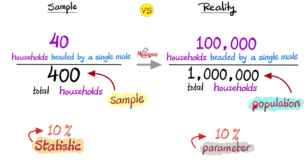Boring definitions: The population is the entire group you're interested in studying. The sample is the subset drawn from the entire population that you're interested in studying. A parameter is a certain characteristic of the population — for example, how many of them are headed by a single male. And the statistic is a number describing some characteristic that you calculate from the sample data. Then we're going to use the statistic to estimate the parameter.